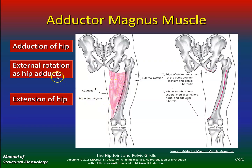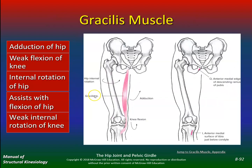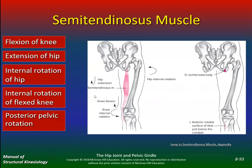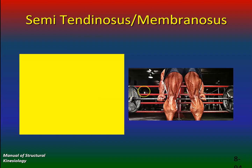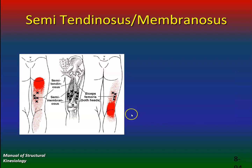Adductor magnus — adduction of the hip, external rotation. Gracilis, semitendinosus. Semitendinosus and semimembranosus can cause all sorts of pain in the posterior thigh. The biceps femoris can also cause all sorts of pain back there.